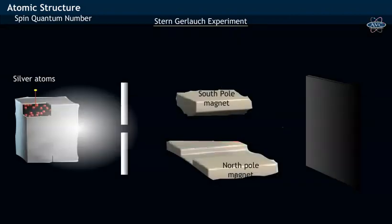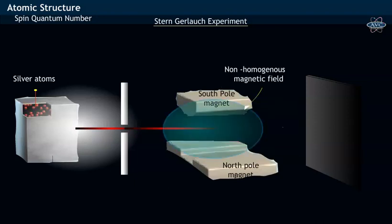In Stern experiment, a thin beam of silver atoms is made to pass through a slit and enter into a non-homogeneous magnetic field. That is, the electron with magnetic momentum either upward or downwards or even random direction passes through the non-homogeneous magnetic field.